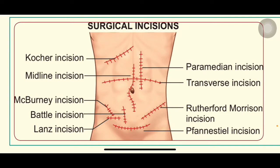Coming to the incisions used for appendicectomies, there are different types: the McBurney incision, Battle incision, Lanz incision, and Rutherford Morrison incision. McBurney, Battle, and Lanz incisions are all present in the same right iliac region. To easily remember these, remember that McBurney fought the Battle of Lanz. McBurney's is oblique, Battle will be vertical, and Lanz incision will be horizontal.